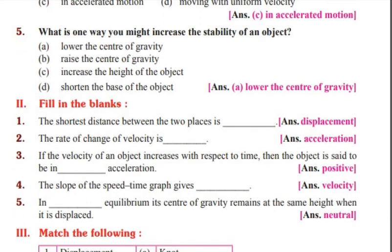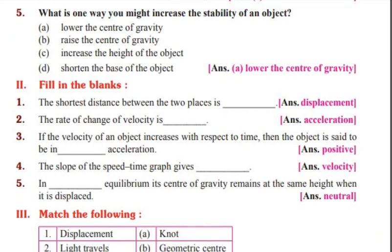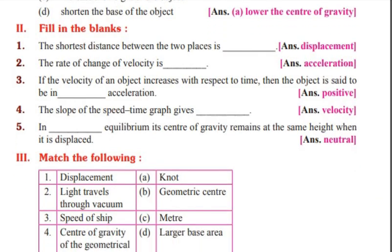What is one way you might increase the stability of an object? If we increase the base of the object, we increase its stability. Also, if we have a lower center of gravity, we lower the center of gravity to increase stability.